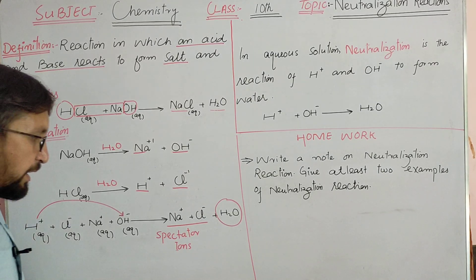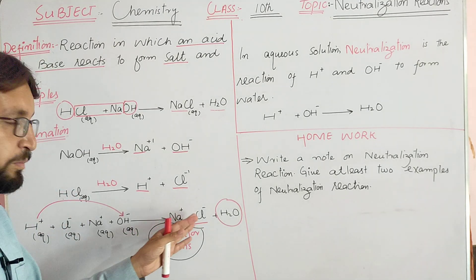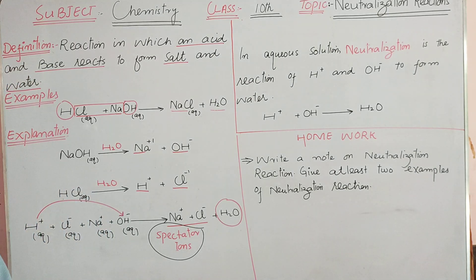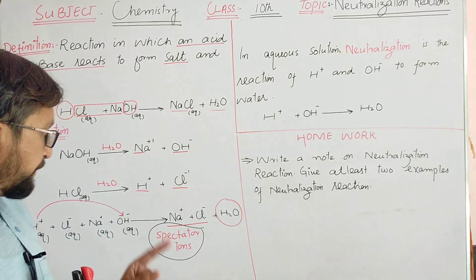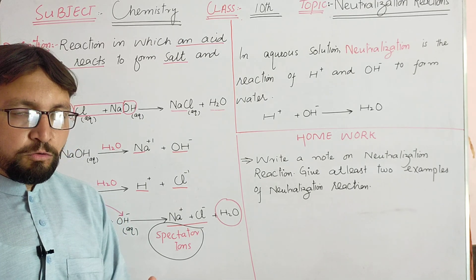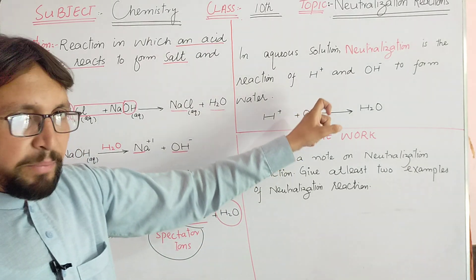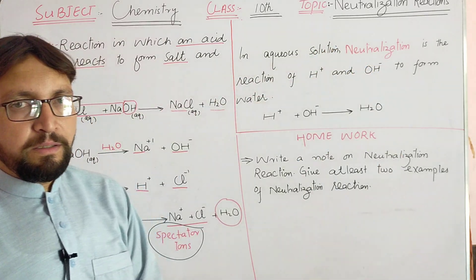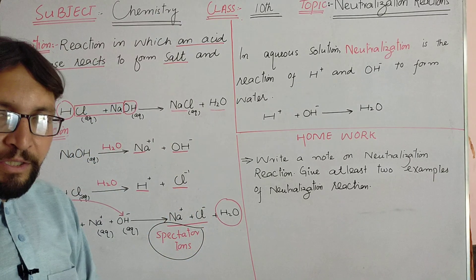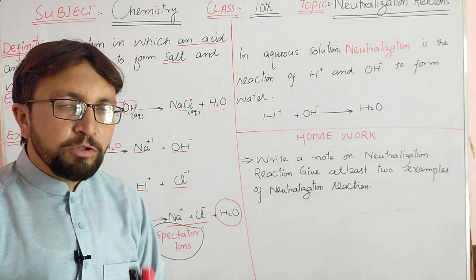The sodium ion and chloride ion are spectator ions — they do not participate in the reaction. The bond that has been made is water. If you have an acid that provides hydrogen ion, and a base that provides hydroxyl ion, then the hydrogen ion from the acid and hydroxyl ion from the base will react. This reaction is called a neutralization reaction.